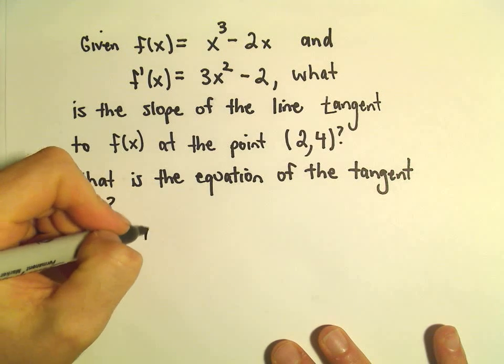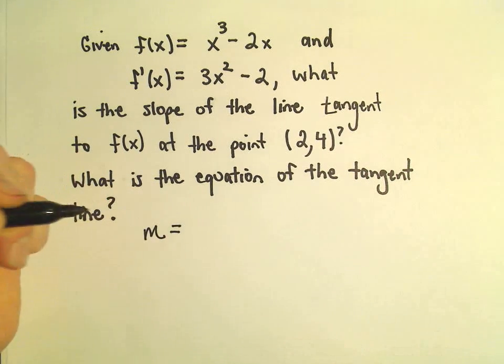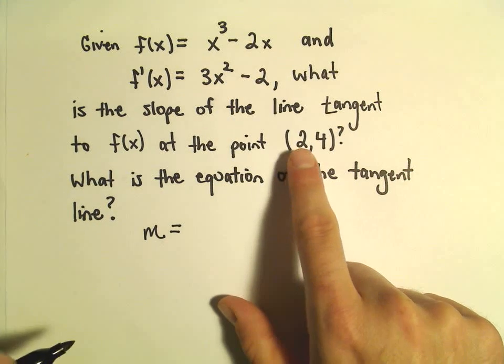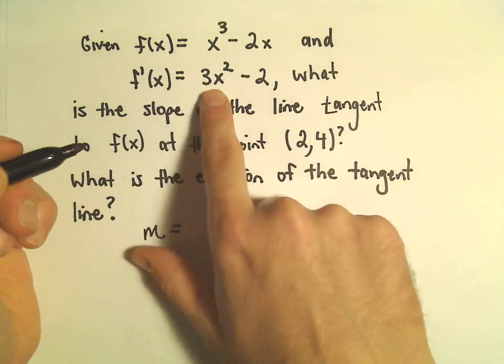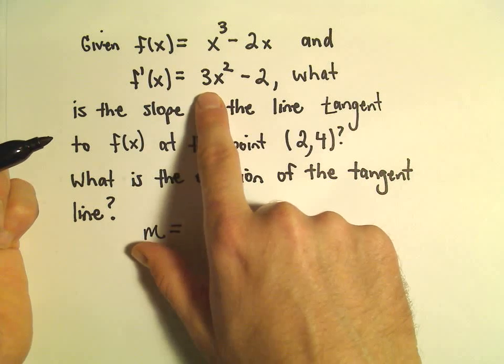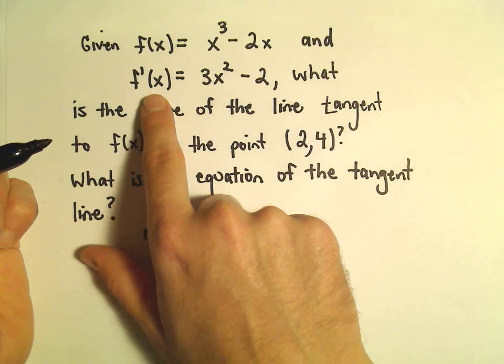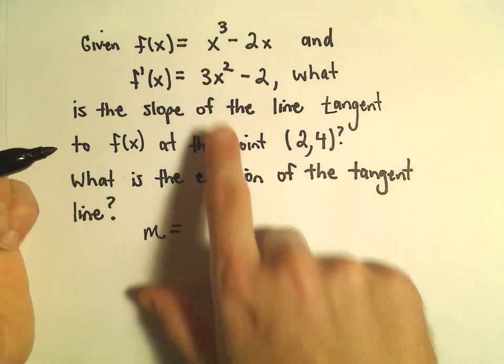Well, to get the slope at the point - in this case, at x equals 2 and y equals 4 - our derivative formula says all you need to know to figure out the slope of the tangent line is the x coordinate.